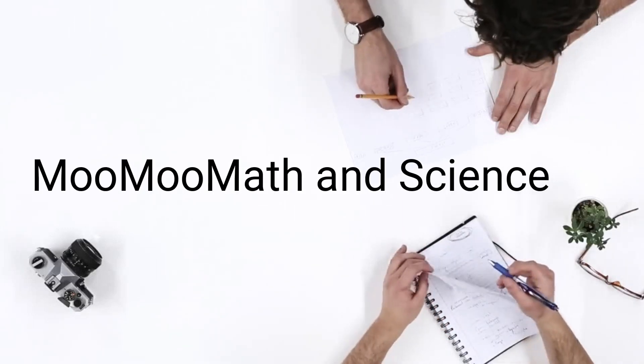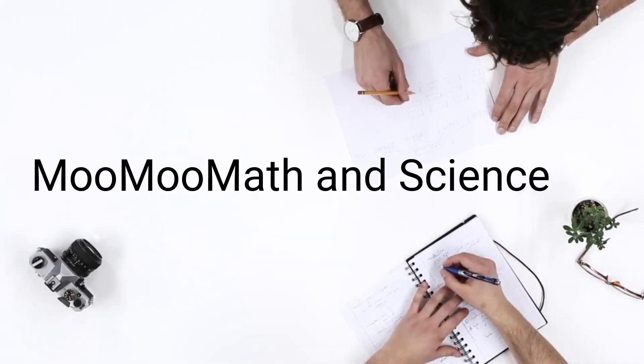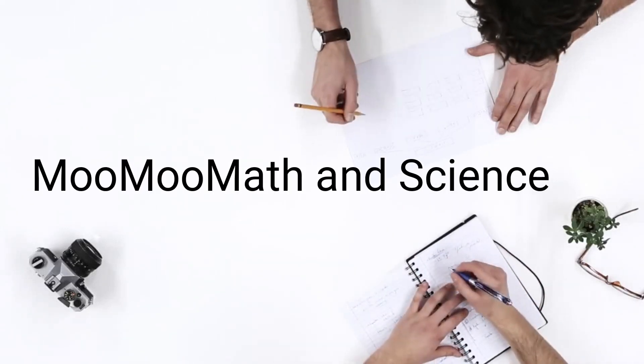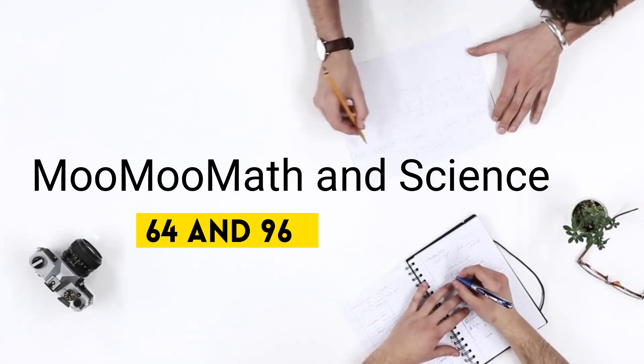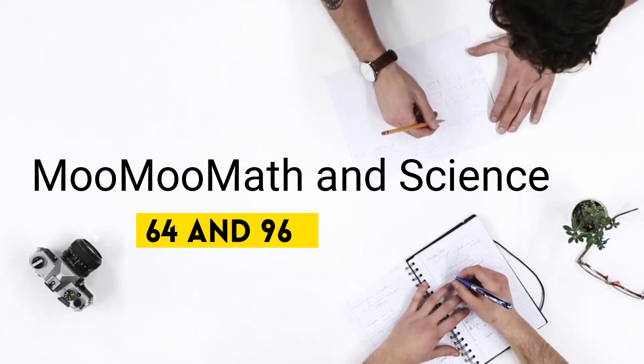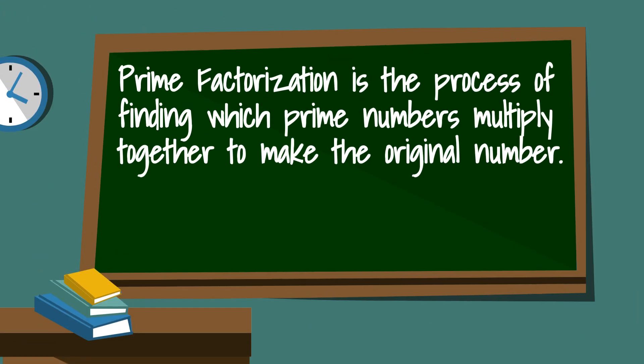Welcome to MooMooMath and Science. In this video I'd like to go through the prime factorization of 64 and 96. Prime factorization is the process of finding which prime numbers multiply together to make the original number.